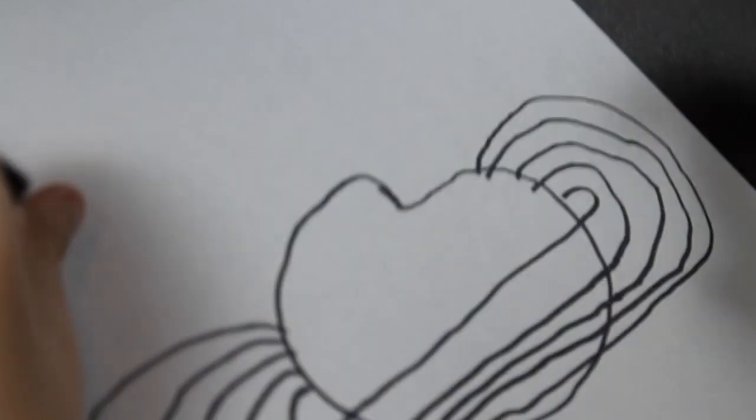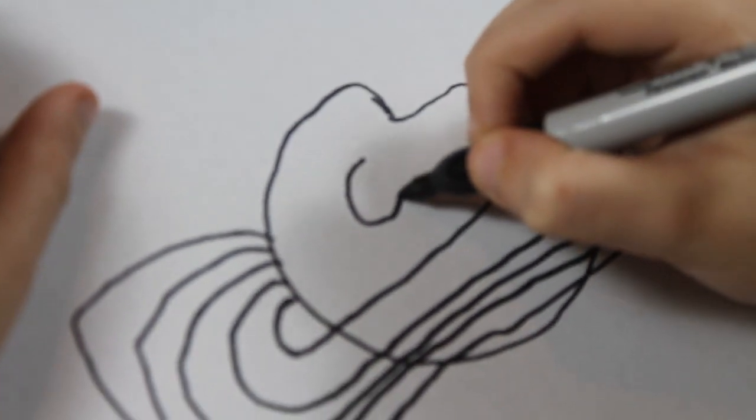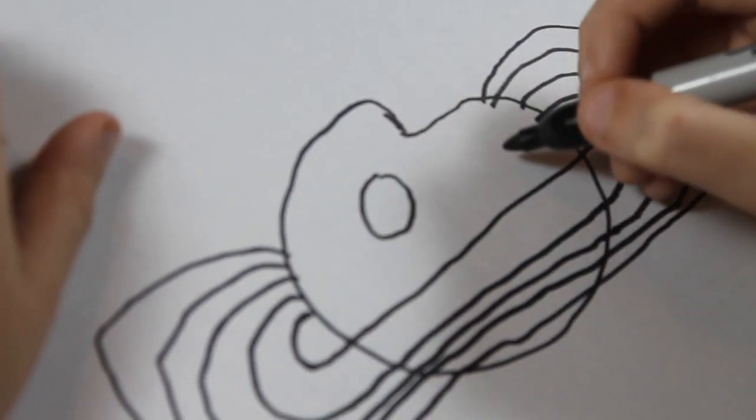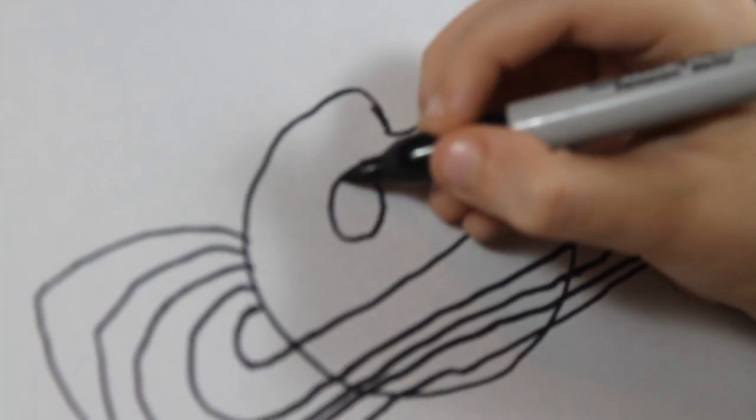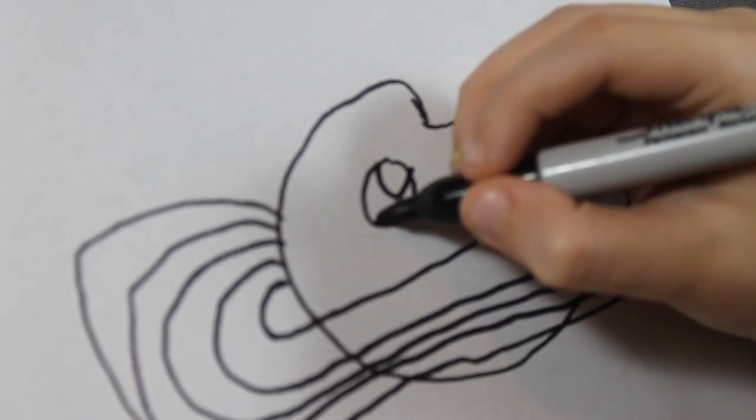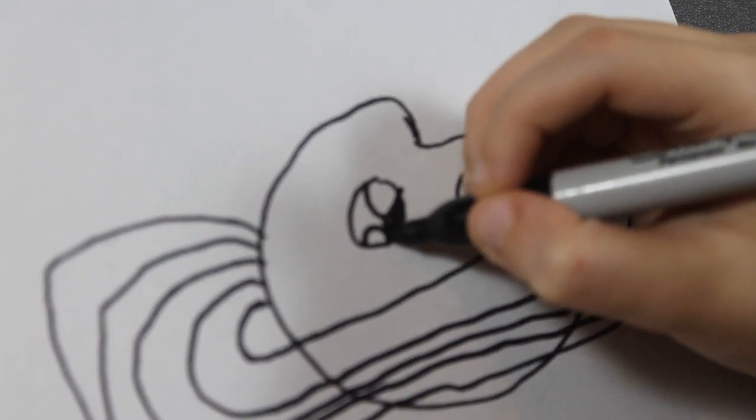There we go. Now I'm going to do a funny face. Draw two circles. Circle right here. And right here inside the eyes. And then color this in.